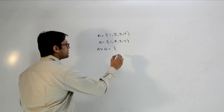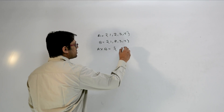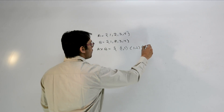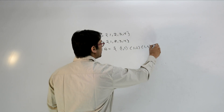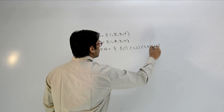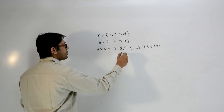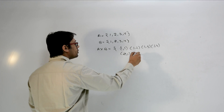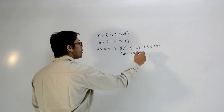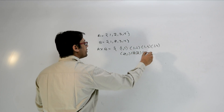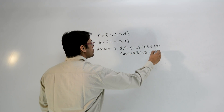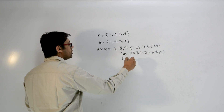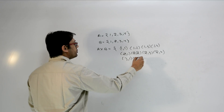So what are the elements of A×B? They are: (1,1), (1,2), (1,3), (1,4), (2,1), (2,2), (2,3), (2,4), (3,1), (3,2), (3,3), (3,4), (4,1), (4,2), (4,3), (4,4).